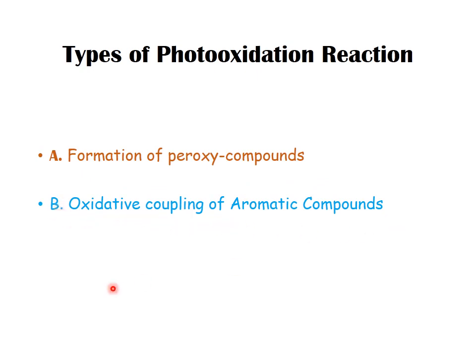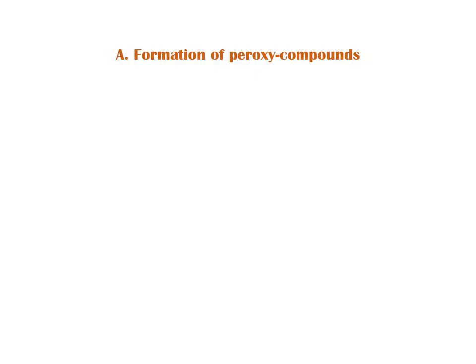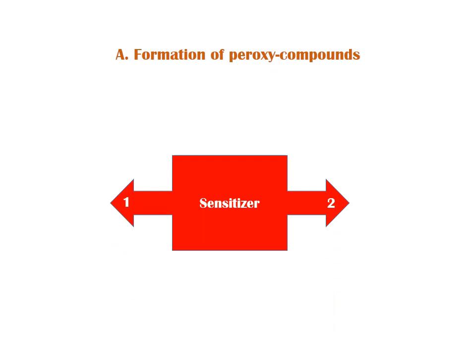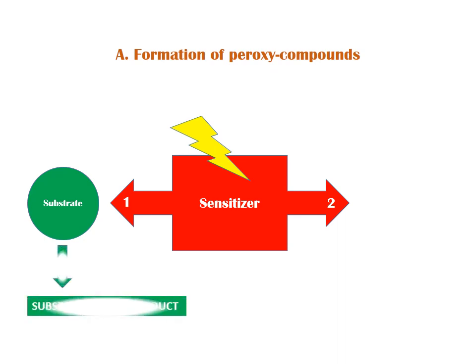For formation of peroxy compounds, as with other photochemical reactions, we use a sensitizer. When you irradiate the sensitizer it attains an excited state. In Mode 1, the excited state sensitizer interacts with the substrate, causing the substrate to produce a radical. This substrate radical then interacts with ground state oxygen to give a product.